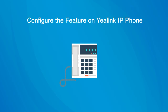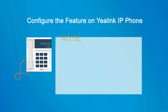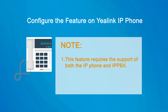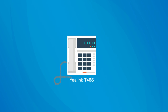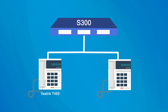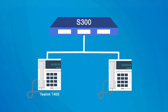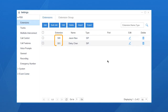Now let's see how to configure this feature on a Yealink IP phone. Before we get started, it's important to note that this feature requires the support of both the IP phone and IP PBX, and the IP phones should be connected to the same PBX. In this video, we will take the Yealink T46S as an example. The T46S and another IP phone have been connected to the same S300, with Line 1 of both phones registered to extensions 500 and 501 respectively.